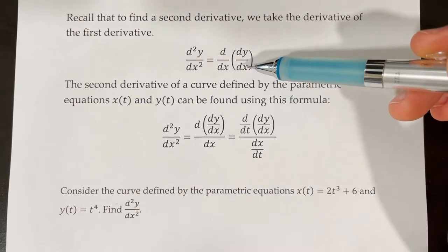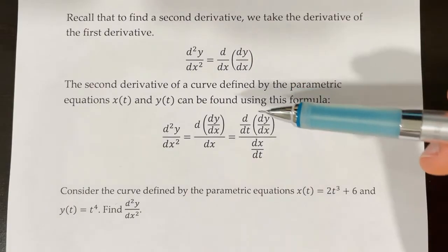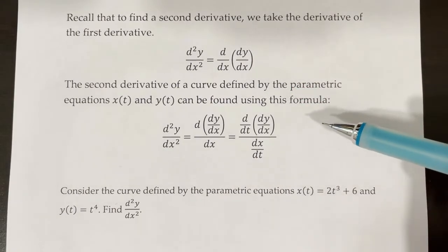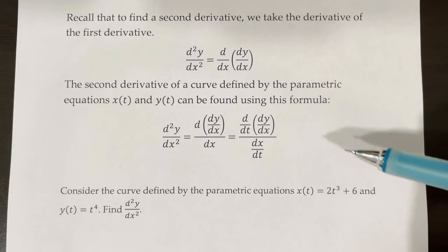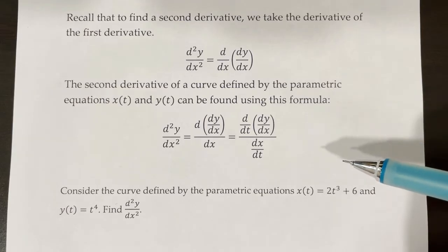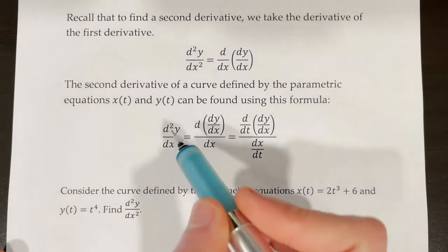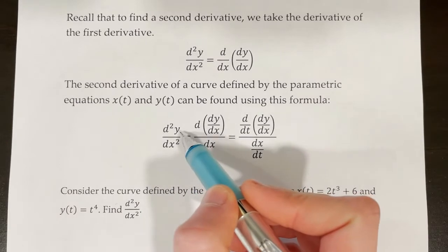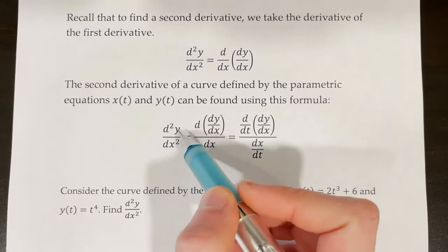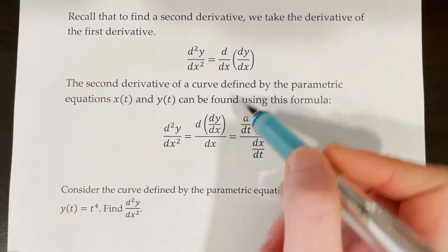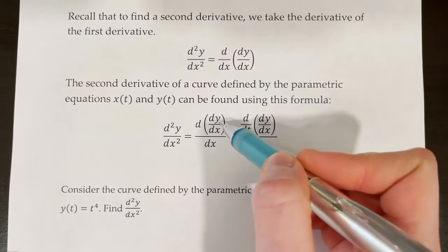Now we can apply this to parametric equations, but it gets a little bit weird here. The second derivative of a curve defined by the parametric equations x of t and y of t can be found using this formula. First we start out with this second derivative of y with respect to x, and then we bring this rule down here.